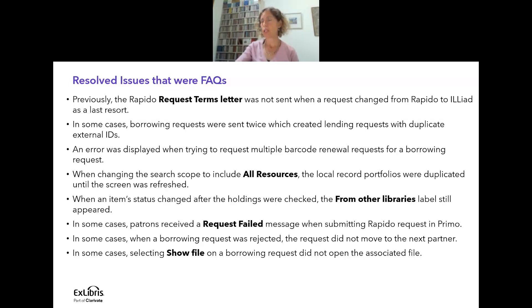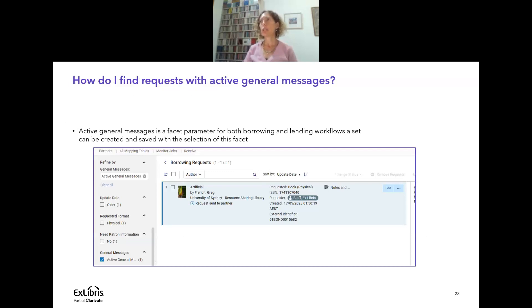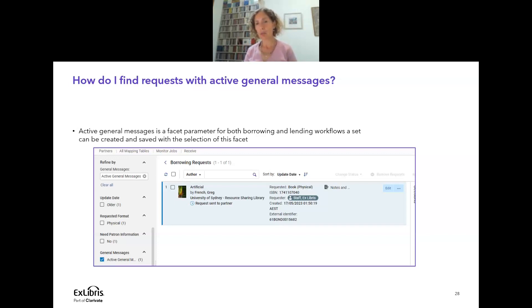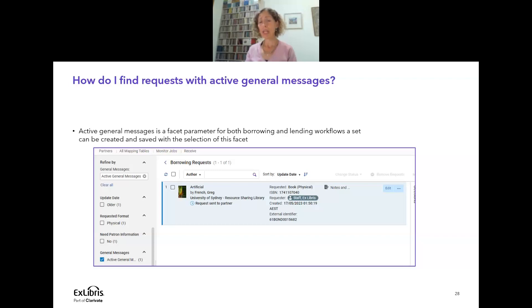Here is one of our frequently asked questions: how do I find requests with active general messages? Not many people know that under 'General message,' you have an 'Active general message' facet. You can facet by this on both the borrowing and lending side and create a set — for example, defining a workflow to check active general messages first thing in the morning or end of day. This is a nice way in a very long list to see which requests have active general messages.